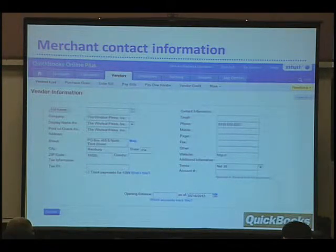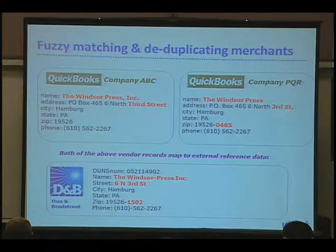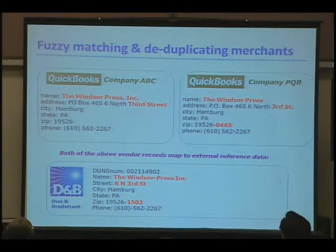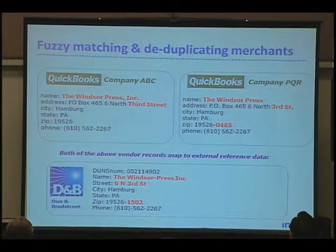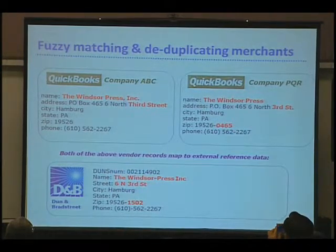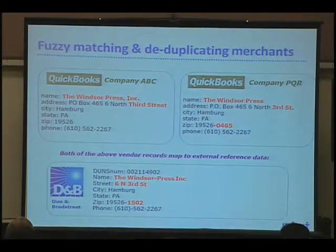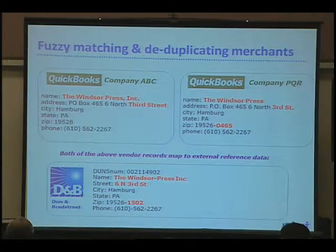One example of where data comes from and is used is in QuickBooks. Imagine you've got two QuickBooks companies — company ABC on the left and company PQR on the right. They've both chosen to represent the same vendor or customer in slightly different ways, as highlighted in red. This is actual real customer data showing how two different QuickBooks customers entered the same vendor.